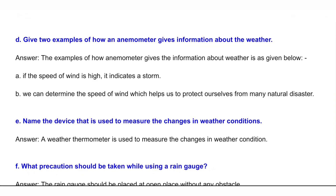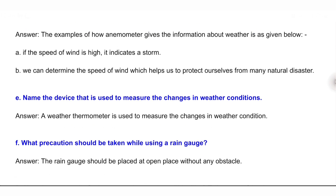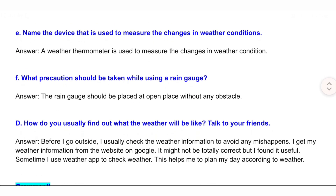B: We can determine the speed of wind, which helps us to protect ourselves from many natural disasters. E: Name the device that is used to measure the changes in weather conditions. Answer: A weather thermometer is used to measure the changes in weather conditions. F: What precautions should be taken while using a rain gauge? Answer: The rain gauge should be placed at an open place without any obstacle.